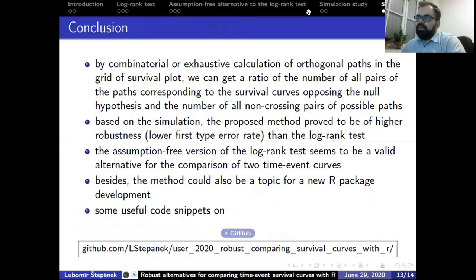While calculating orthogonal paths in the grid of survival plots, we can get a ratio of the number of all pairs of paths that are more distant from each other, which oppose the null hypothesis, and the number of all non-crossing pairs of possible paths.